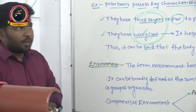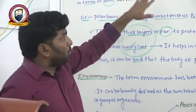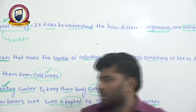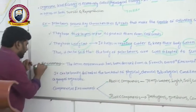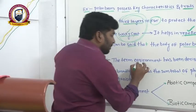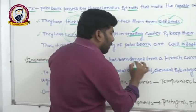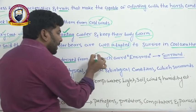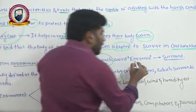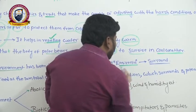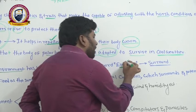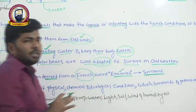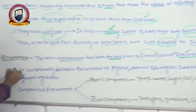What is meant by environment? The term 'environment' has been derived from the French word 'envirania,' which means 'surround' or 'surrounding.'